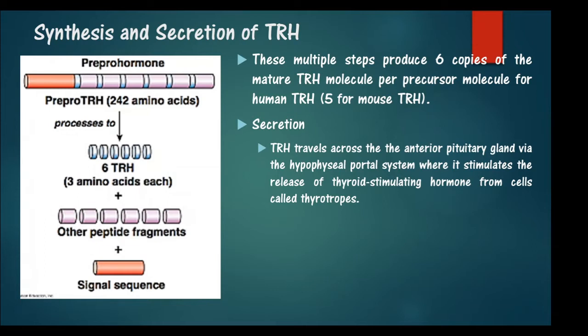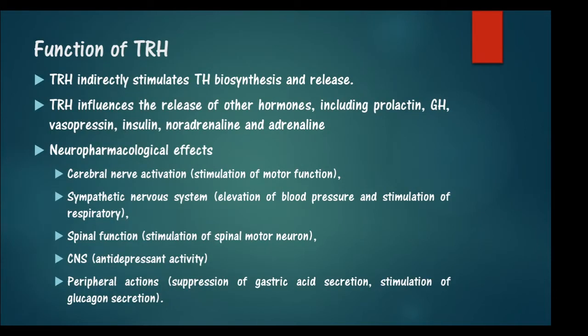TRH travels to the anterior pituitary gland via the hypophysial portal system and stimulates the release of thyroid stimulating hormone from cells called thyrotrophs. TRH directly stimulates TSH, which in turn directly stimulates thyroid hormone biosynthesis and release, so TRH indirectly stimulates thyroid hormone release. TRH also influences the release of prolactin, growth hormone, vasopressin, insulin, noradrenaline, and adrenaline.